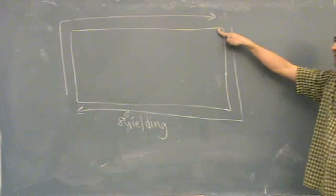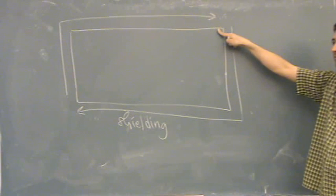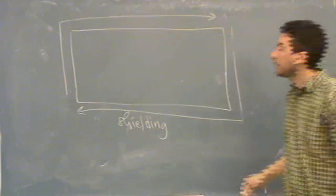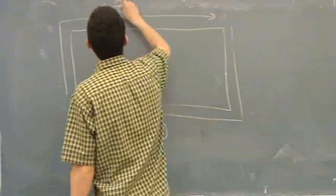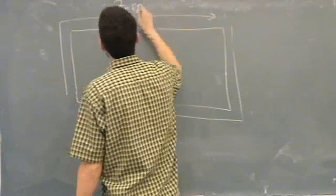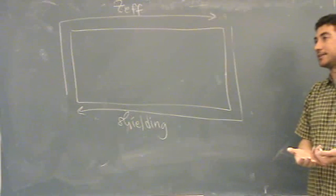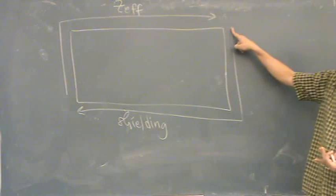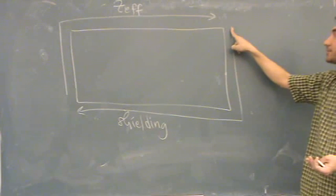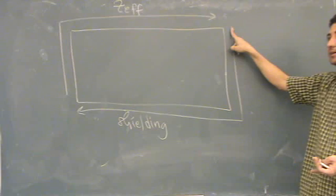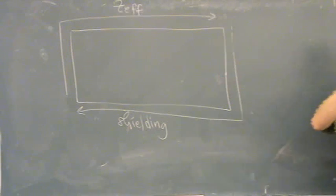If you're up here, all valence electrons see all protons in the middle. The opposite of shielding is something called Z-effective. It's essentially the same thing. Z-effective is how many protons are seen. So if there's no shielding, then you see all the protons. So Z-effective is large. Z stands for the atomic number.